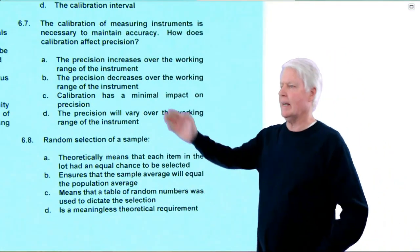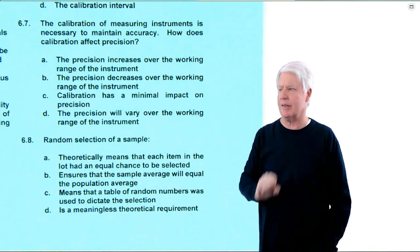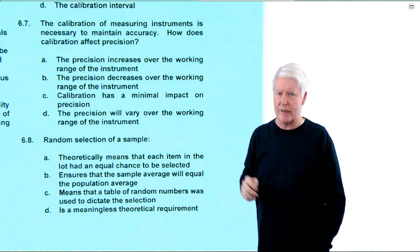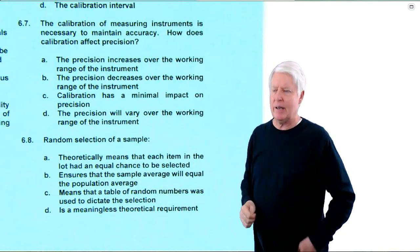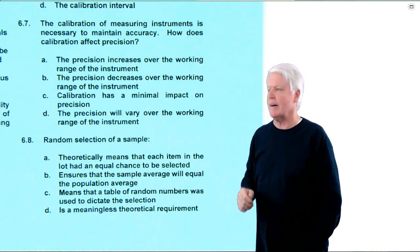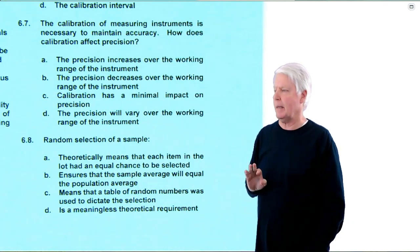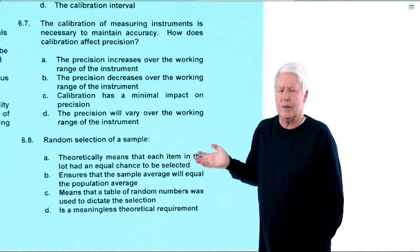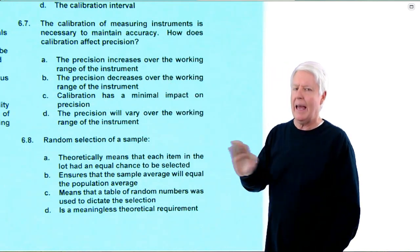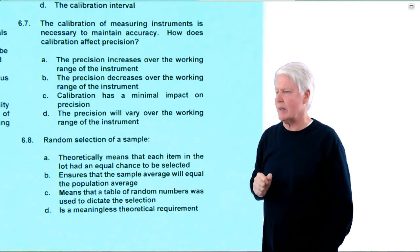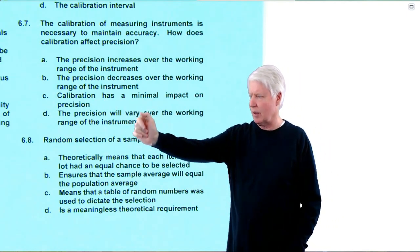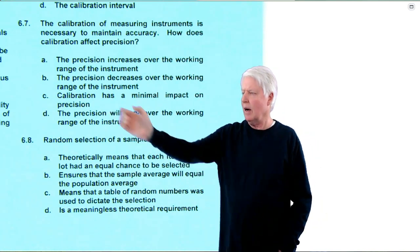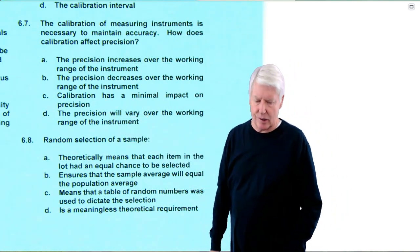Question 6.7: the calibration of measuring instruments is necessary to maintain accuracy — true. Decreasing bias increases accuracy; remember that, they test on it often. How does calibration affect precision? It does not — they are considered independent of one another. 'Precision increases over working range' — no. 'Precision decreases over working range' — no. 'Calibration has minimal impact on precision' — correct. 'Precision will vary over working range' — no, it has to be C. The answer is C.